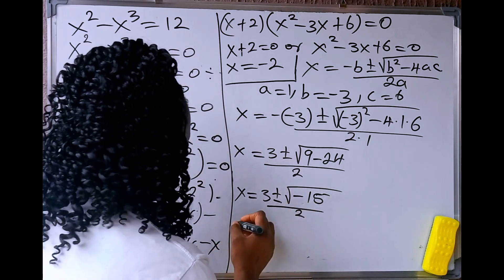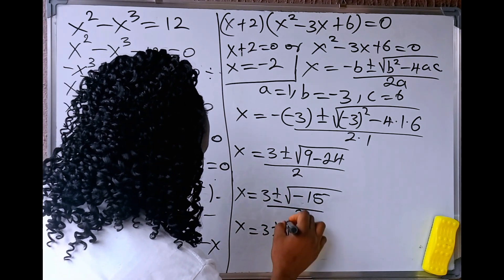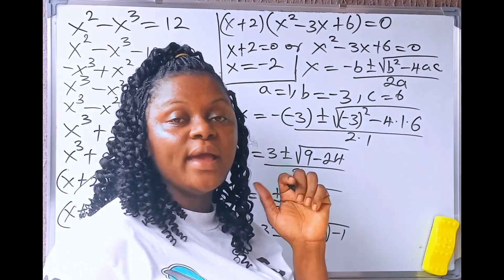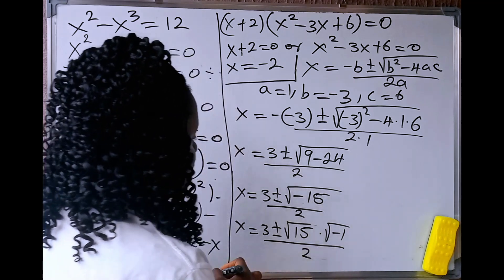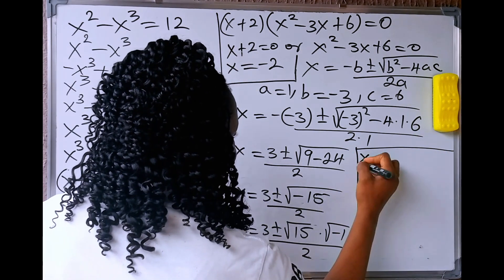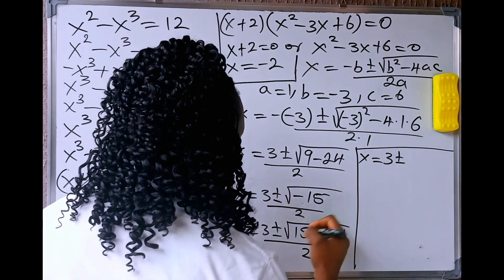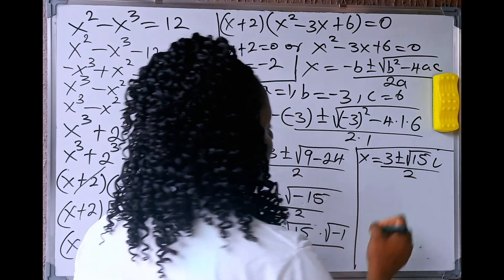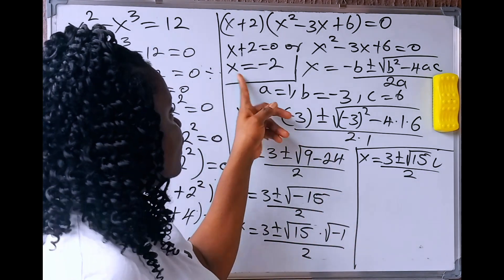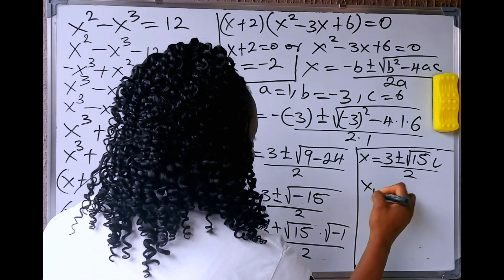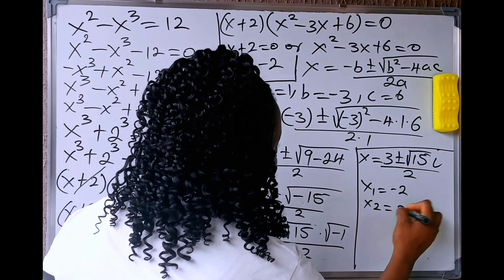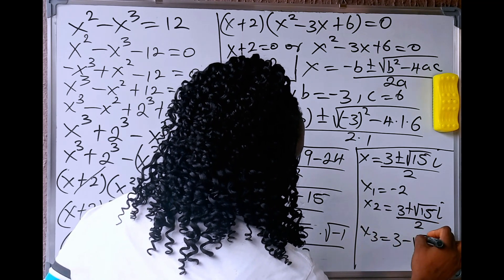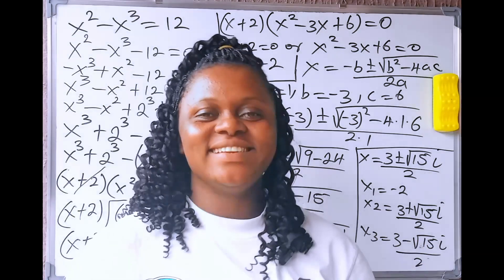So we have minus 15 under the square root, divided by 2. We can write this as 3 plus or minus square root of 15 times square root of minus 1, divided by 2. Now, square root of minus 1 is i, an imaginary number. So x equals 3 plus or minus square root of 15 times i, divided by 2. Therefore, x₁ equals minus 2, x₂ equals (3 plus square root of 15 i) divided by 2, and x₃ equals (3 minus square root of 15 i) divided by 2. These are the values of x in this given equation.